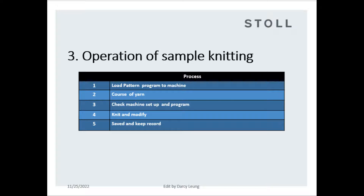Topic 3: Operation of sample knitting — relates to steps of processing a sample pattern. Step 1: Load machine program to machine by USB or online loading. Step 2: Course of yarn — very important. Please keep the yarn free of obstacles and crossing, as that reduces yarn tension and causes yarn break.